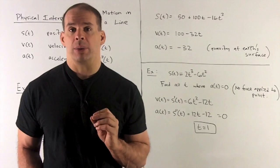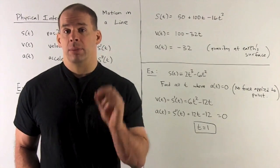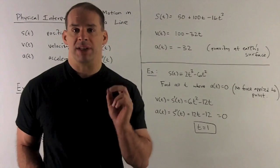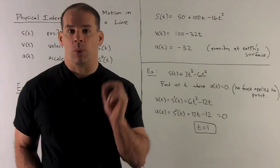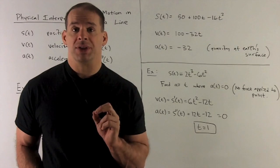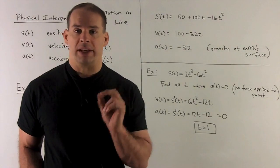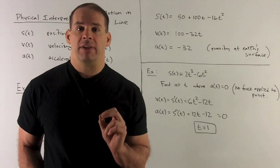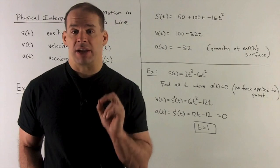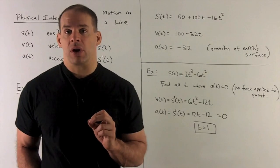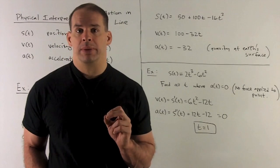Let's look at another example. I'm going to have position function given by 2t cubed minus 6t squared. And what we want to do is find all points where the acceleration is equal to zero. So, what do I need to do? I take one derivative. I get velocity. Take a second derivative. I get acceleration. Set acceleration equal to zero.